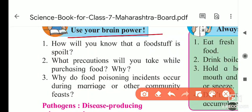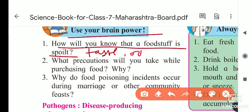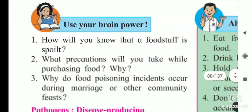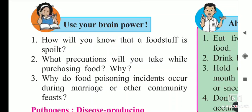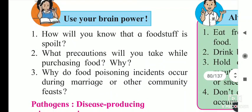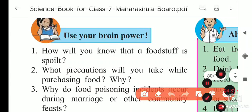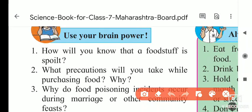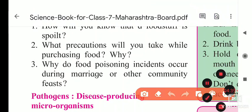Use your brain power: how will you know that food stuff is spoiled? Its taste changes, its odor changes — it gives a bad odor. Its quality also changes. For example, when chapati or bakery items get spoiled, a sticky layer forms inside. Curry or tea left out also shows a sticky appearance.